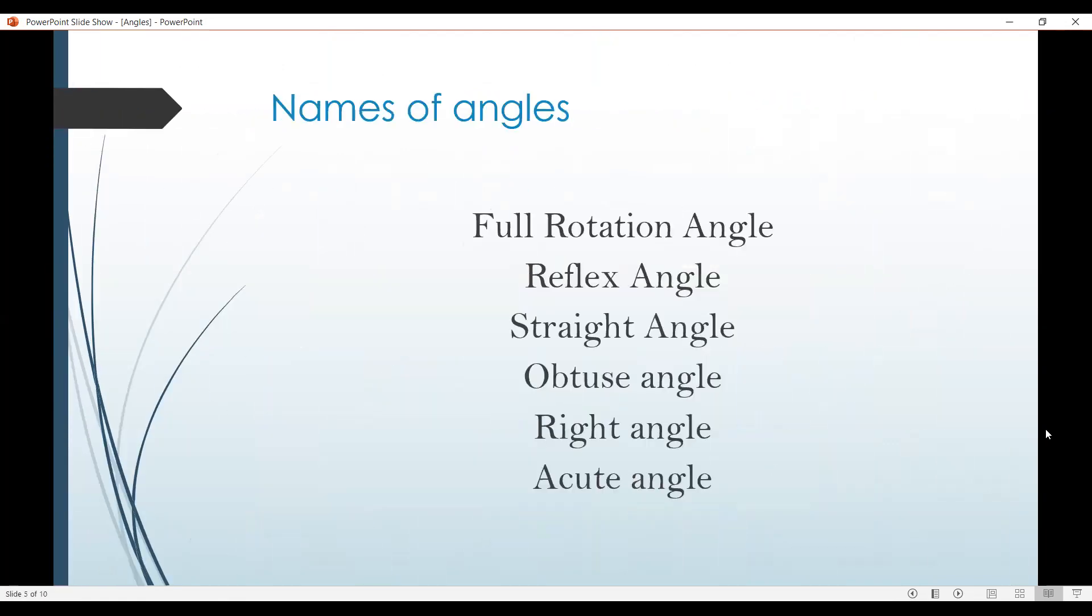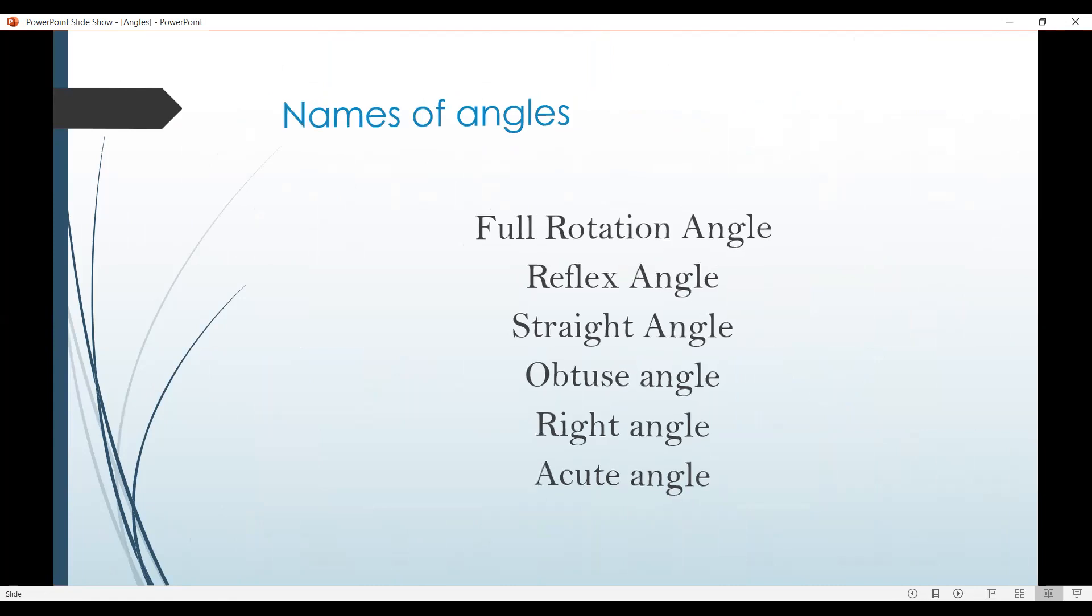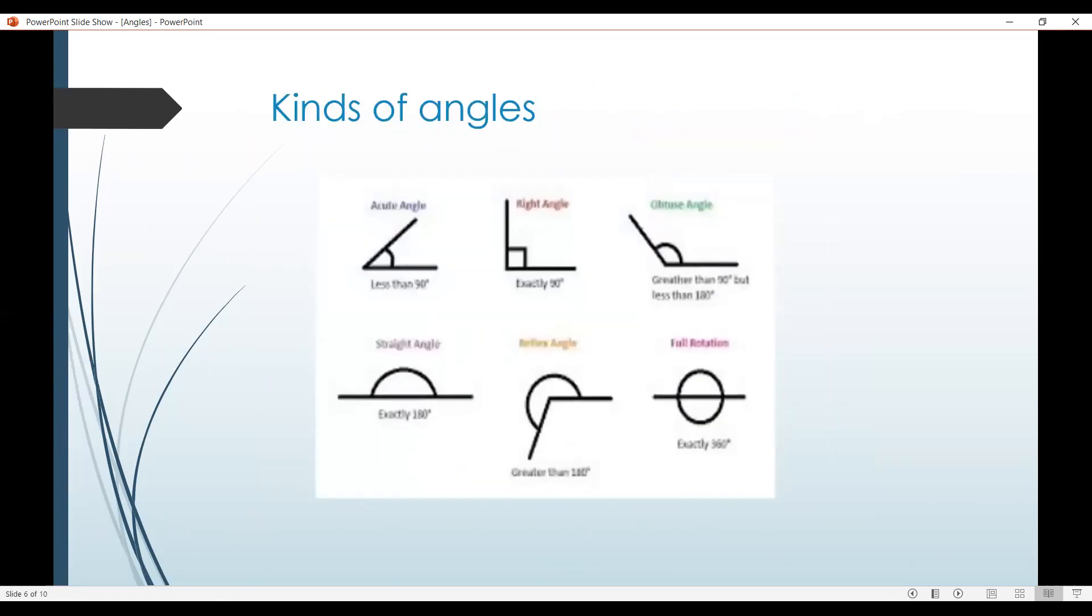Names of Angles: Full rotation angle, reflex angle, straight angle, obtuse angle, right angle, and acute angle. Here are the kinds of angles. Like this one, acute angle, it's less than 90 degrees. The second one is right angle, it's exactly 90 degrees. And the last one is full rotation angle, it's exactly 360 degrees.